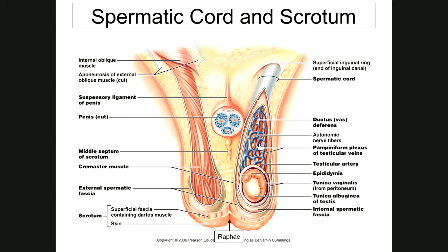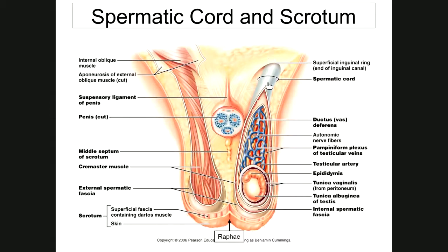When the testicle traveled from the abdominopelvic area down into the scrotum, it passed through the inguinal canal — a hole in the abdominal wall through which the spermatic cord passes. This is a weak spot in the floor of the abdomen that can tear open, causing an inguinal hernia. If it tears, abdominal contents such as the small intestine can fall into the scrotum, which is very painful, requiring the contents to be pushed back up and the hole patched.